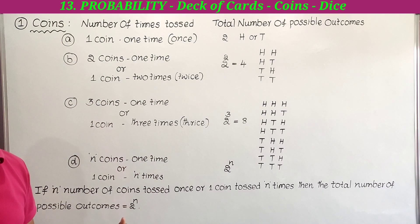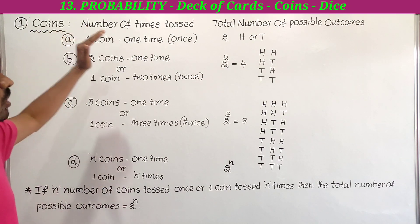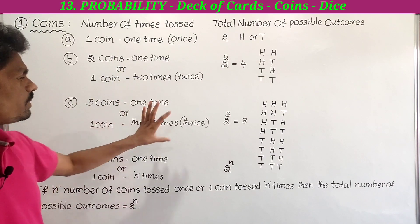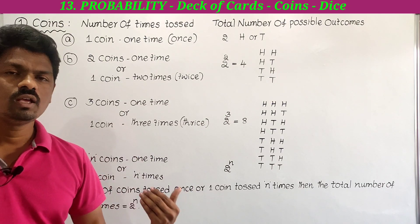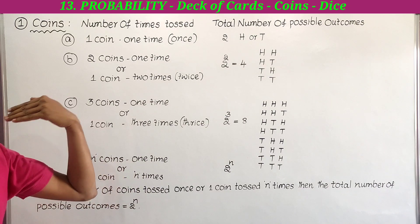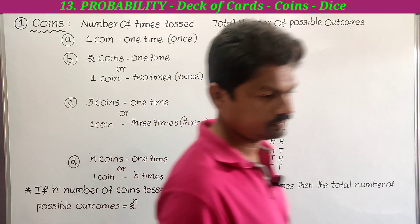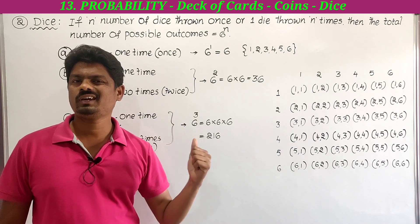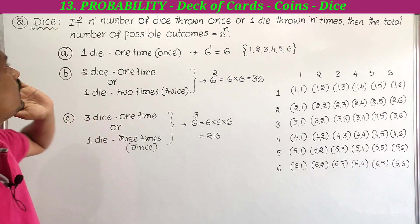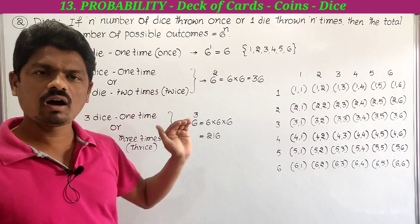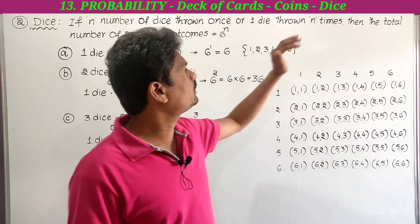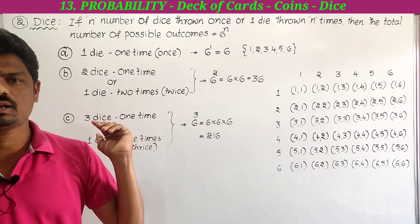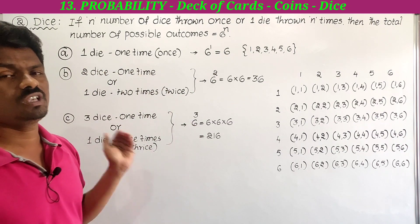This formula is very important for finding the total number of possible outcomes regarding coins — just remember 2 to the power n. Next, we look at dice. If n number of dice are thrown once, or one die is thrown n times, then the total number of possible outcomes equals 6 to the power n.